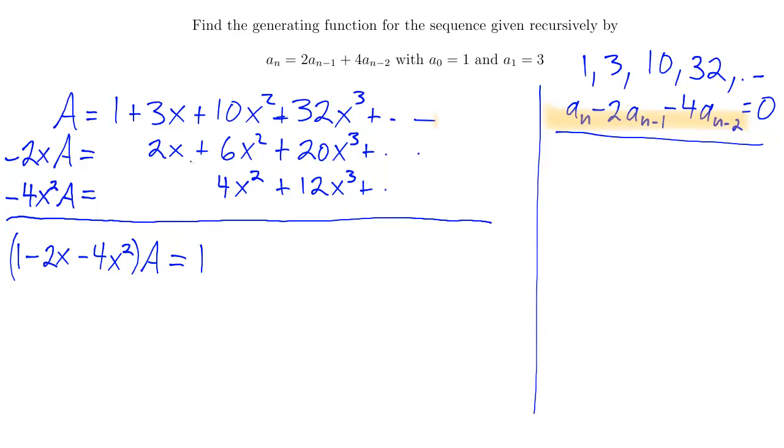3x minus 2x gives me x. And let's see what happens after that. I have 10x squared minus 6x squared, down to 4x squared, minus 4x squared gives me 0x squared. Okay, what about the next one? 32x cubed minus 20x cubed minus 12x cubed is again 0x cubed.